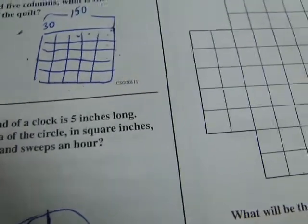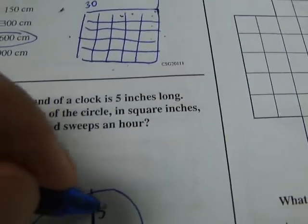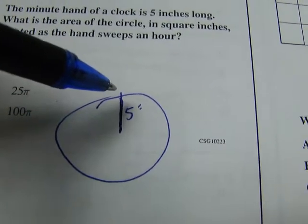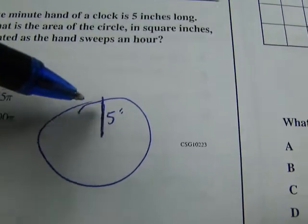So this is the minute hand. It's five inches long. If it sweeps an hour, that means it goes all the way around the circle. So basically, it's asking us, what is the area of this circle?